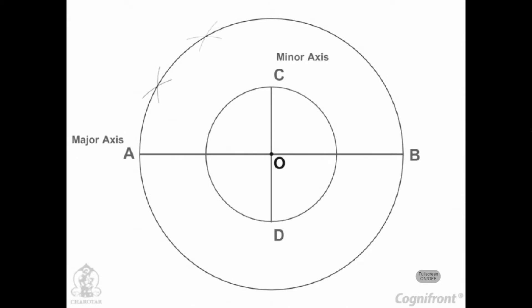Divide the major axis circle into a number of equal divisions, say 12, and mark points 1, 2, etc., as shown in the figure.